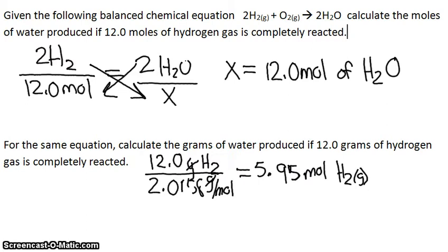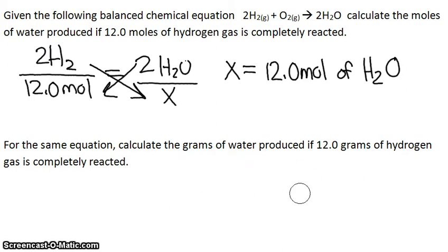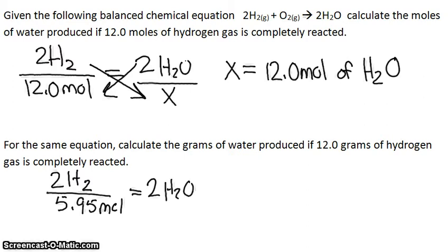So I'll just erase that, so we have room to do our other work. So we know that we have 5.95 moles. Remember that. So we're going to do the same thing as we did up above. We're going to go 2H2 gas over 5.95 moles is equal to 2H2O over X.